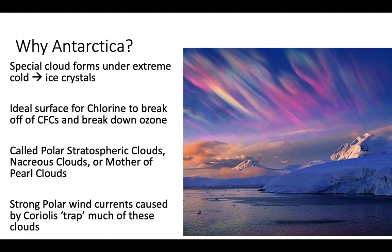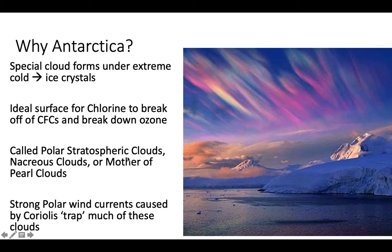Why is it so bad in Antarctica? It gets up to negative 80 degrees Celsius in Antarctica during the winter — that's super cold. Special clouds will form under this extreme cold during the Antarctic winter and form ice crystals. These ice crystals are the perfect surface for chlorine to react on, break off of the CFCs, and start breaking down ozone. These special clouds — if you're curious, they can be called polar stratospheric clouds, or nacreous clouds, or mother of pearl clouds. The strong polar winds from the Coriolis effect will trap a lot of these clouds around the Antarctic area.